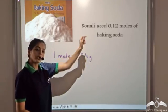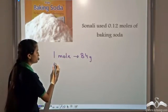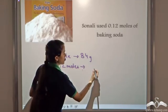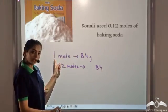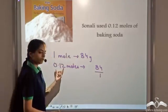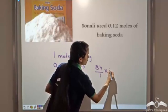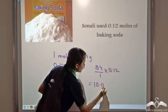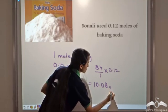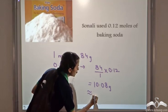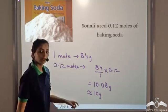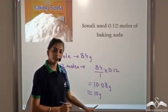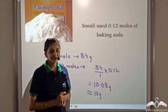Sonali had used 0.12 moles of baking soda. Using the unitary method, 0.12 moles weighs 84 x 0.12 = 10.08 grams, which is approximately 10 grams of baking soda. So Sonali goes and tells the shopkeeper she needs 10 grams of baking soda — that obviously makes sense to the shopkeeper.